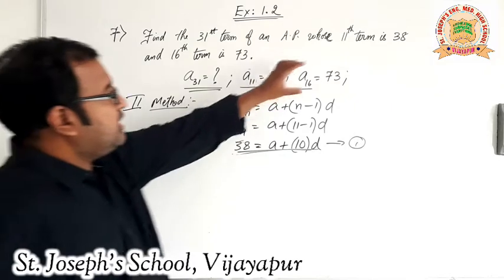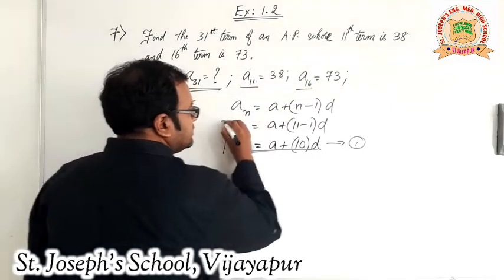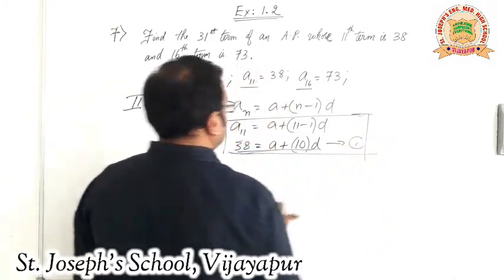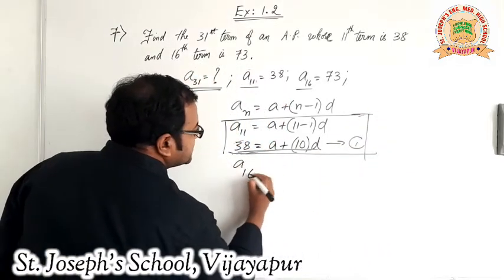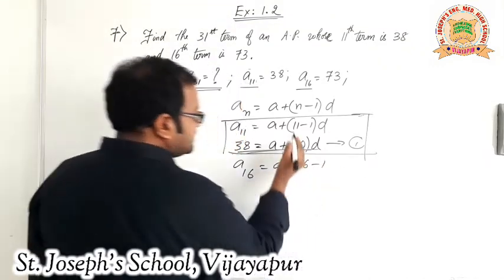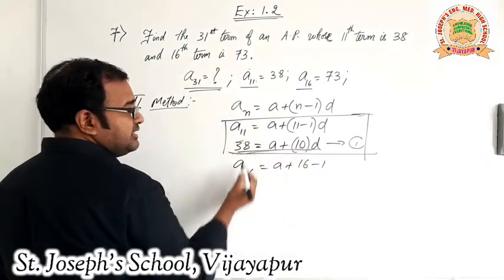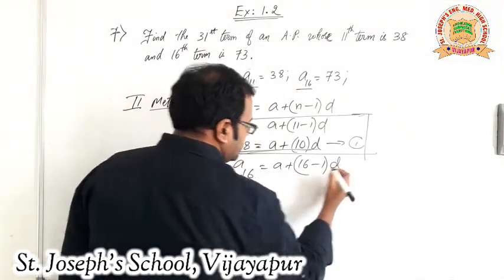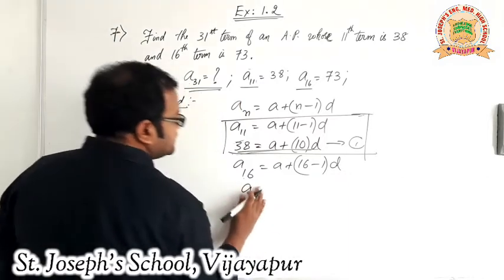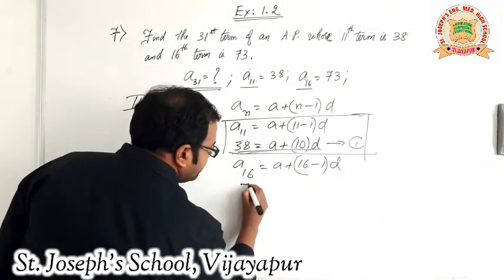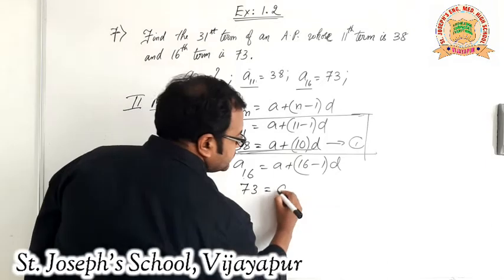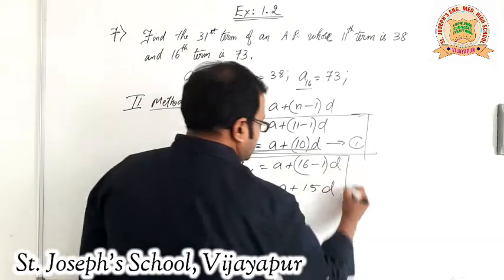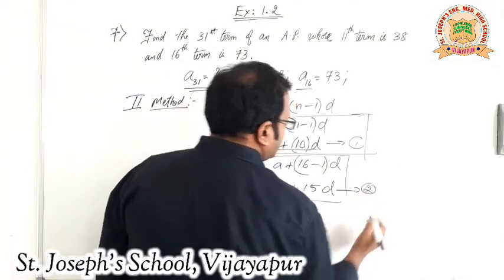Applying the same formula for A16, with N replaced by 16: A16 equals A plus (16 minus 1) into D. A16 is 73, so 73 equals A plus 15D. This is equation 2.